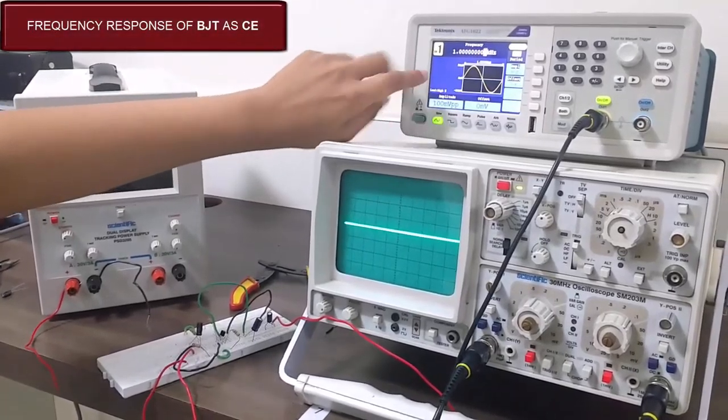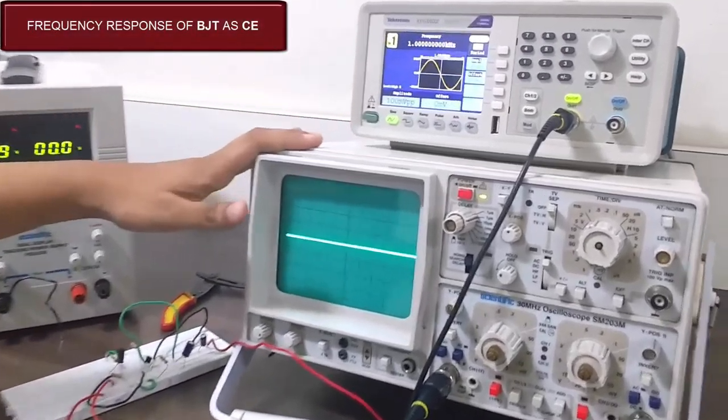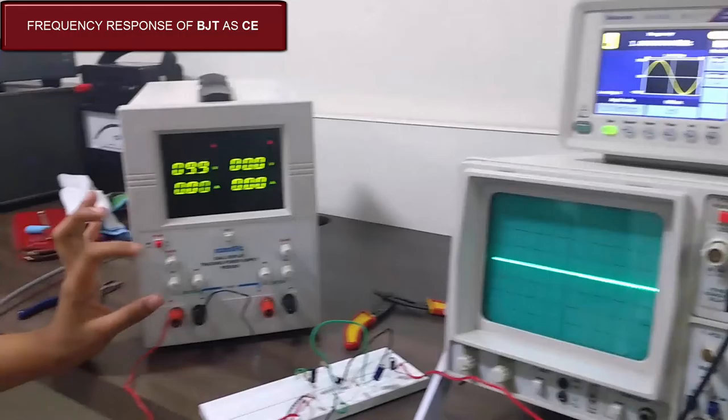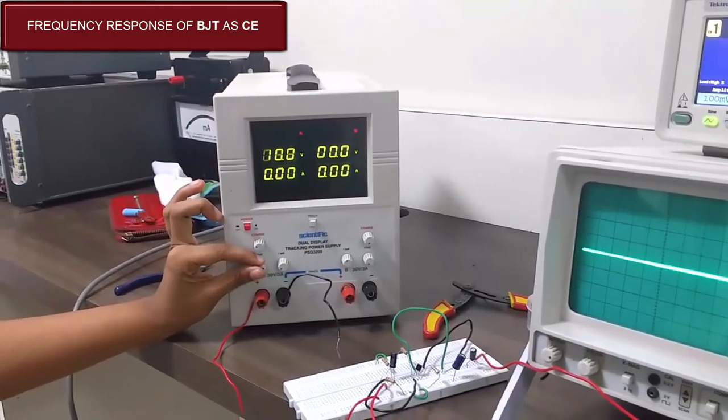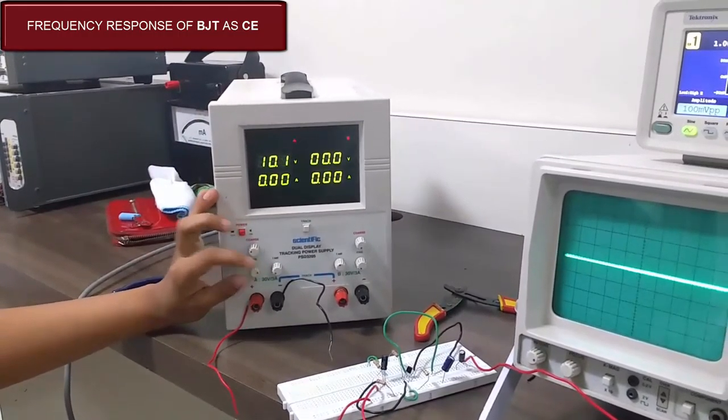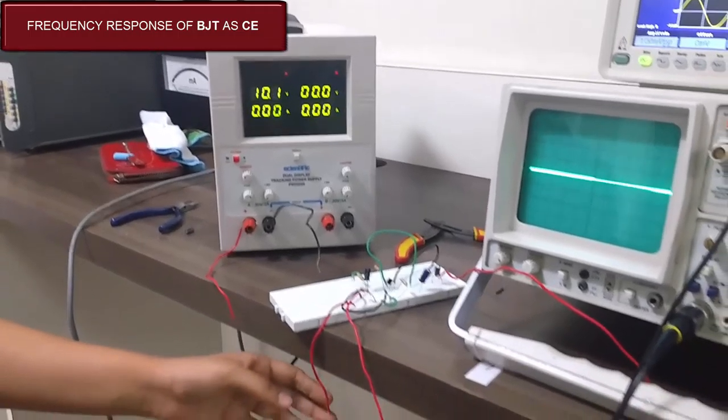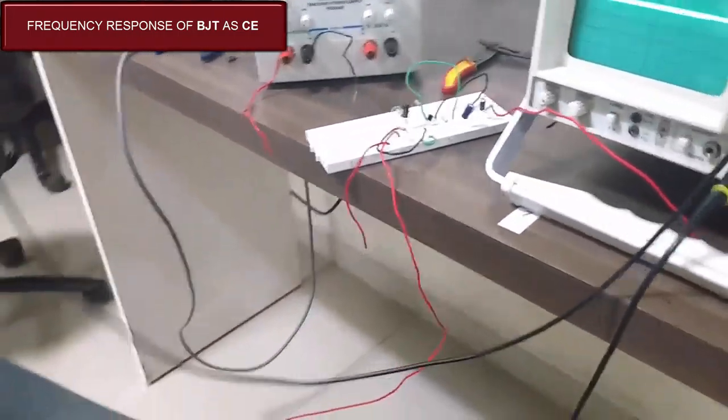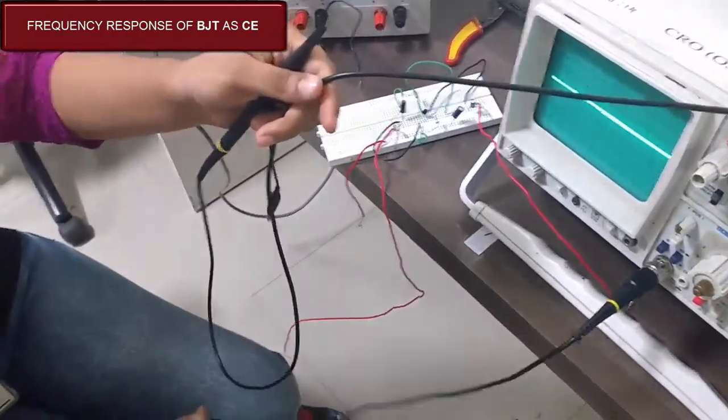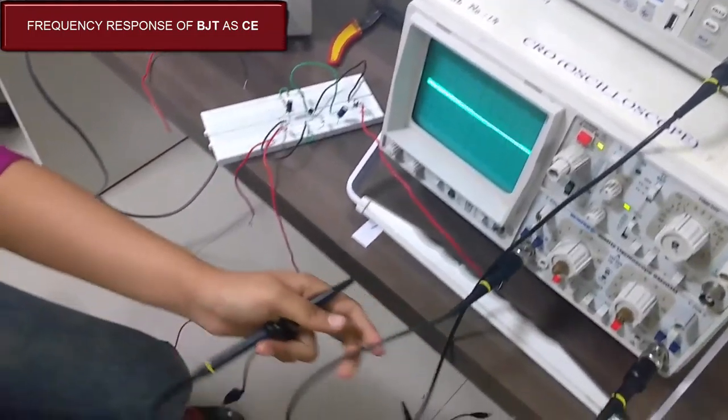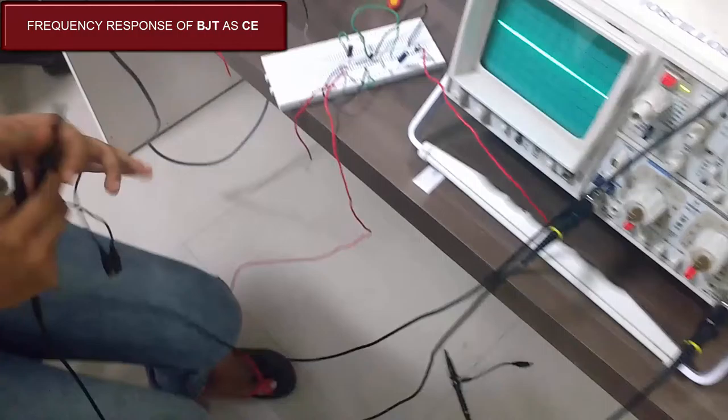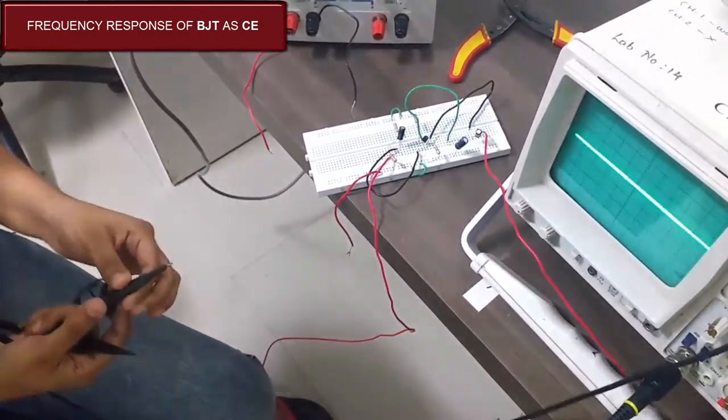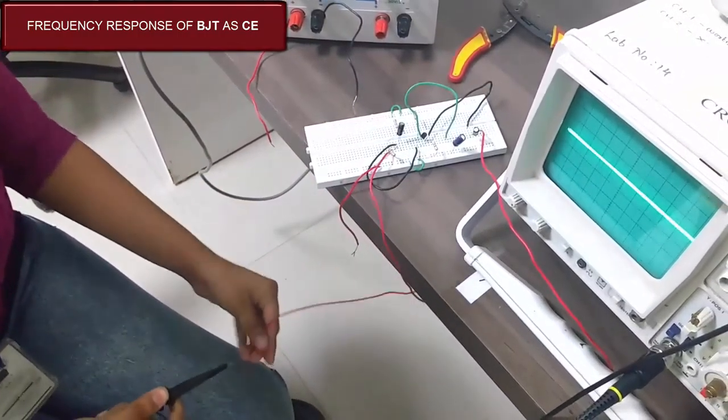The function generator, we have set it at 1 kHz and this is CRO. I have already set this at 10 volts. Let's give the input first with the help of this function generator. This probe is used for the function generator and this is used as a first channel.